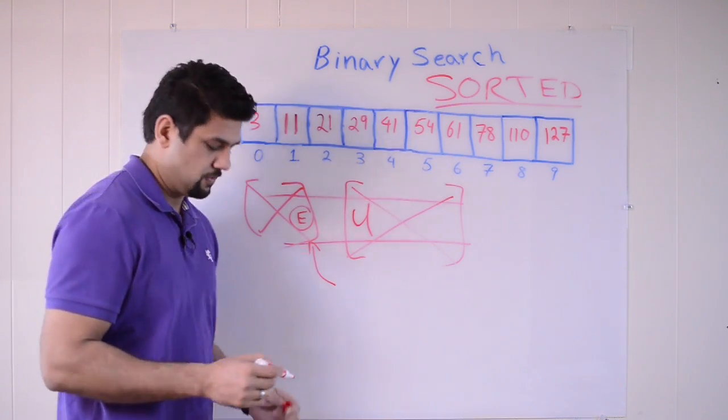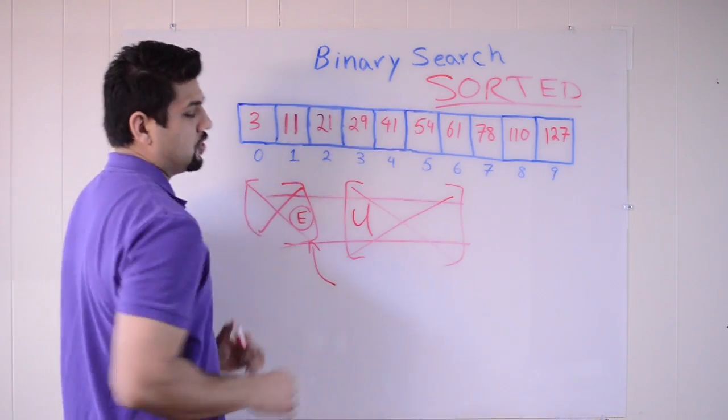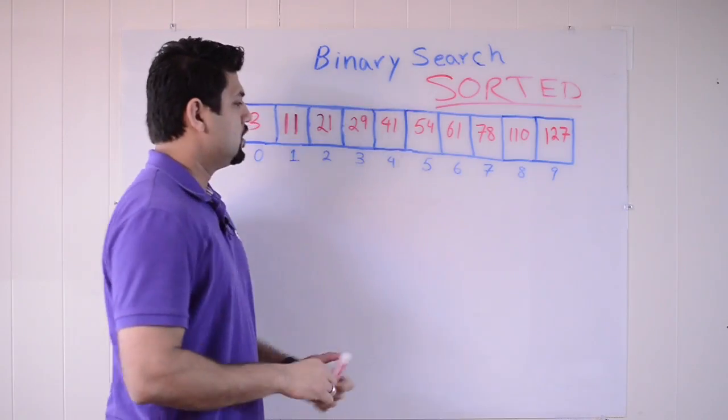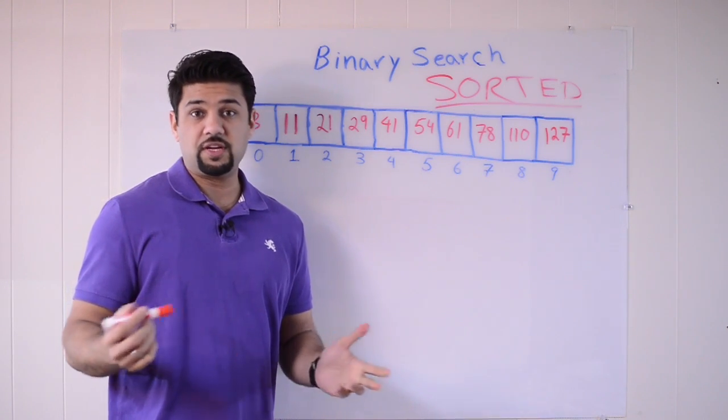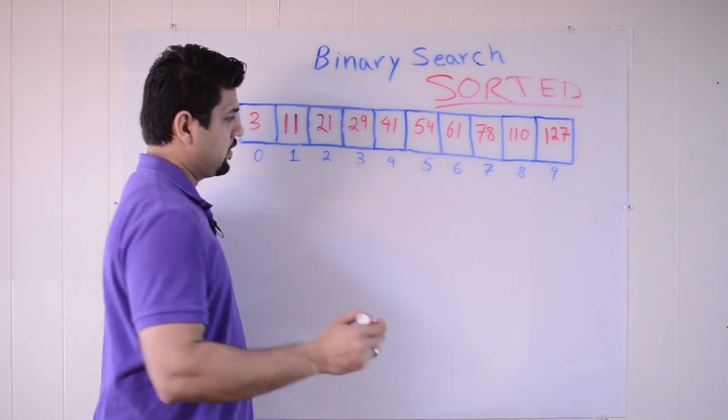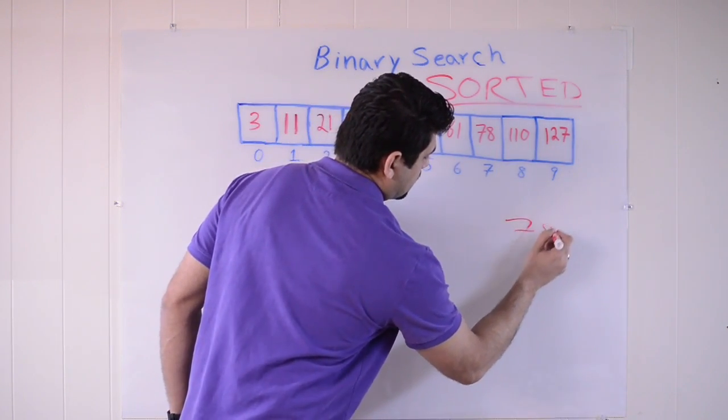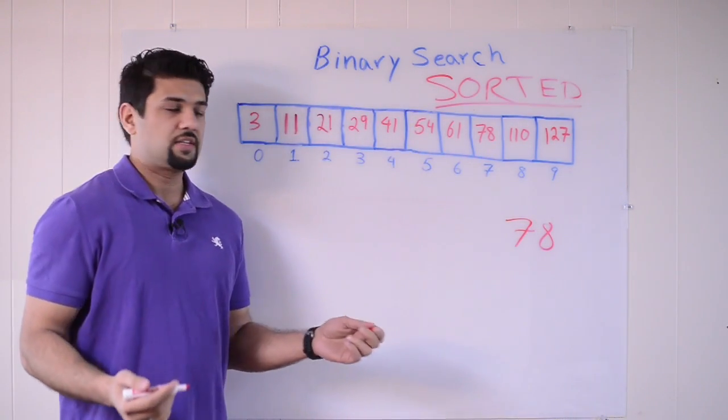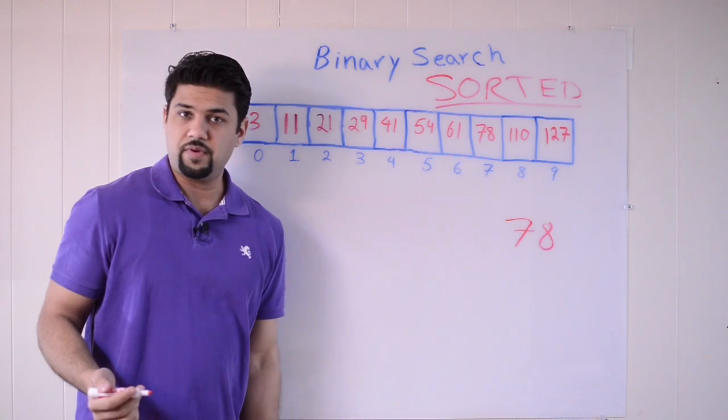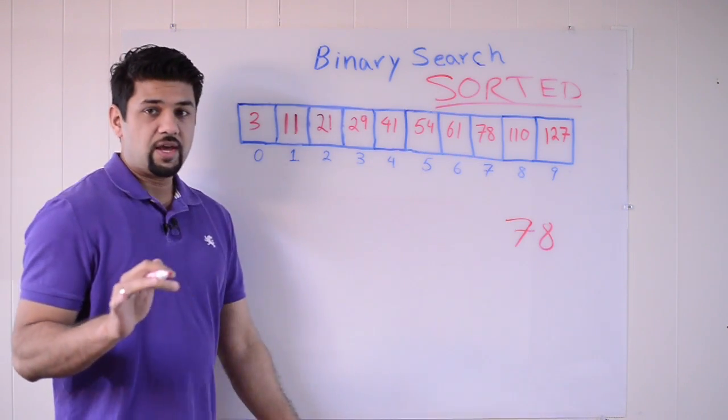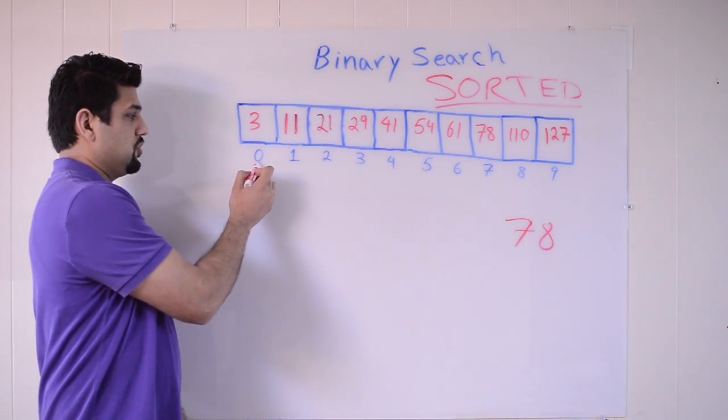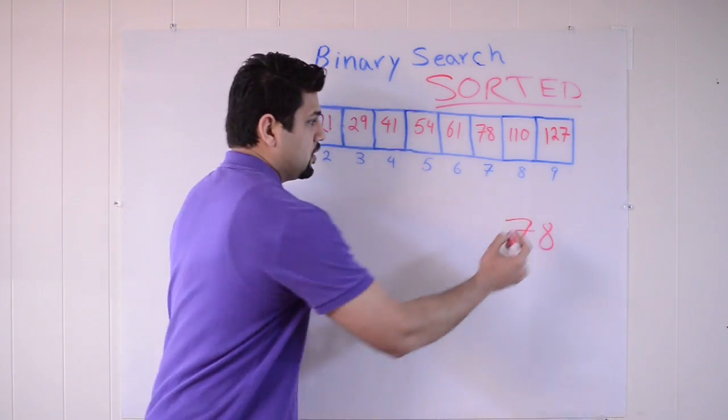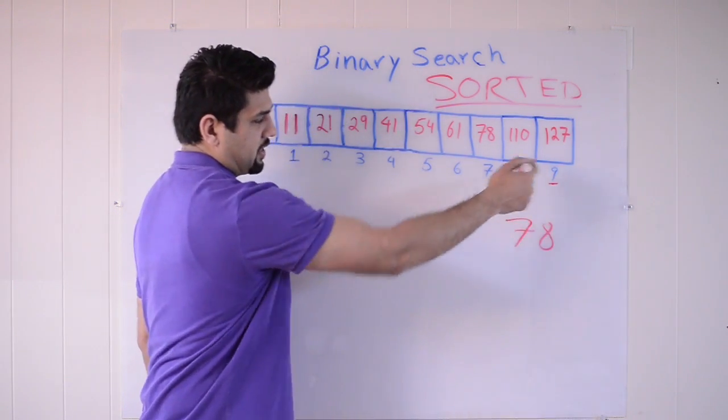So let's implement binary search on an array. Let me get rid of some of this scribble here. So let's say we want to search for the number 78 in this array. That's the mystery number. We want to know which index position, which slot contains the number 78. And remember, in an array, everything starts from index position 0, goes up to the length of the array, which is 10 minus 1, which is the last slot index. Number 9.